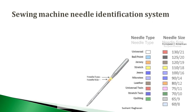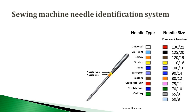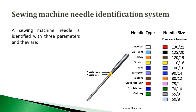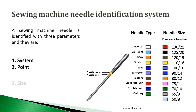Sewing machine needle identification system. The below sketch shows the needle types and needle size. A sewing machine needle is identified with three parameters, and they are: system, point, and size.